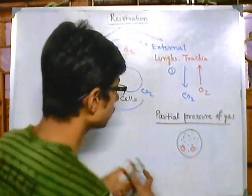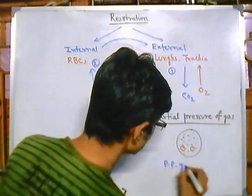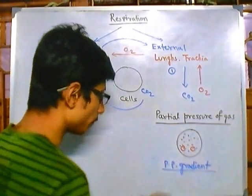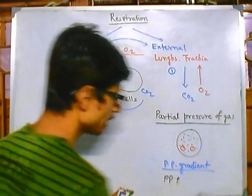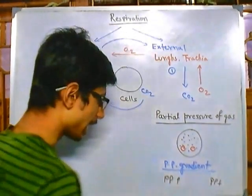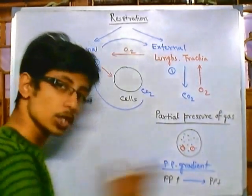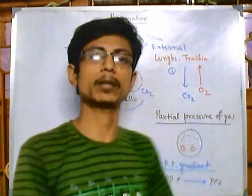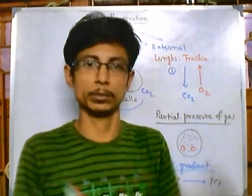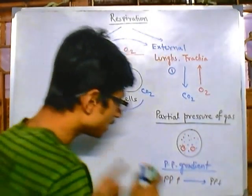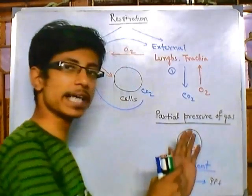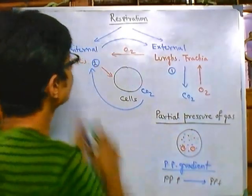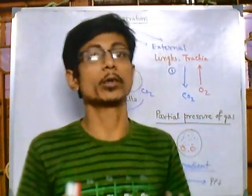The partial pressure gradient is very important because it drives gas movement: if partial pressure is high in one place and low in another, gas will always flow from high partial pressure to low partial pressure. In all the upcoming videos about internal and external respiration, you will see the beauty of this partial pressure gradient forcing gas to move from one place to another.